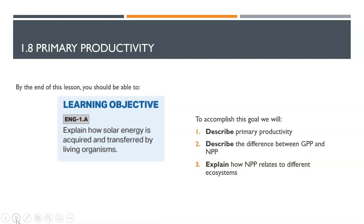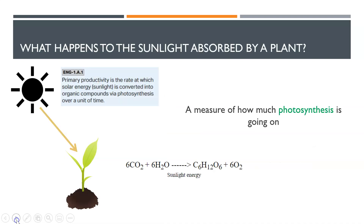To accomplish this, we will describe primary productivity, describe the difference between GPP and NPP, and explain how NPP relates to different ecosystems.